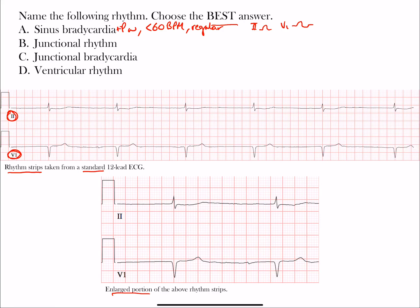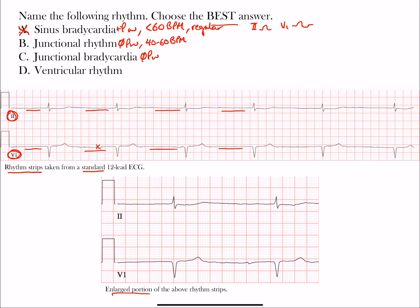Looking at the strip, there are actually no P waves — whether you look in lead 2 or V1, there are no P waves present. So sinus bradycardia is not correct; that hopefully narrows it down. Now, junctional rhythm also has no P waves, and so does junctional bradycardia. Junctional rhythm has a rate between 40 and 60 beats per minute, while junctional bradycardia is when the rate is below 40 beats per minute. Both are regular rhythms.